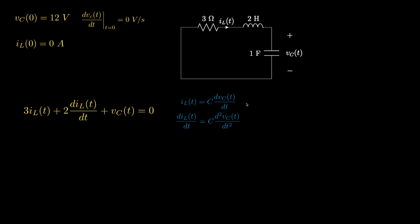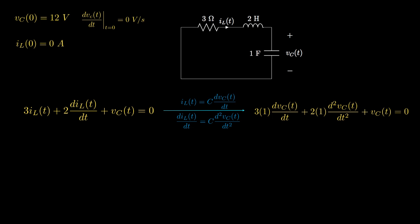We note that the current through the inductor also flows through the capacitor and use the physical relationship for voltage across and current through a capacitor. This allows us to express the current as C times dVC/dt, and by differentiating that relationship, express the derivative of the current as C times the second derivative of VC.